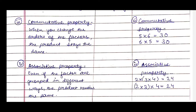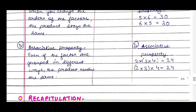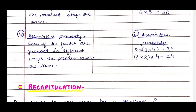Then the Associative Property: even if the factors are grouped in different ways, the product remains the same. For example, 2 × (3 × 4) also gives us 24, and (2 × 3) × 4 also gives us 24. So when they are grouped together in different ways, the product is the same.